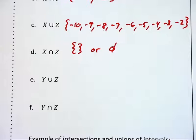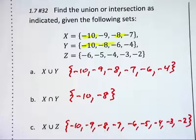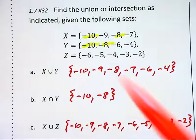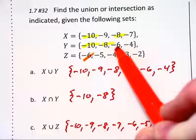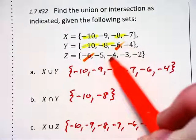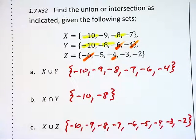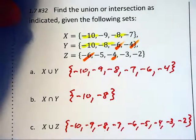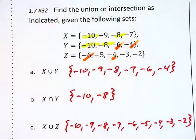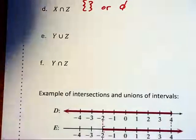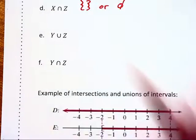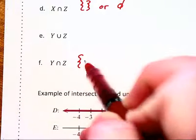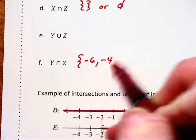Now, as far as sets Y and Z are concerned, let's go back and look at Y and Z — we have a little bit of an overlap with negative six and with negative four. So I'm going to fill in that intersection in part F first. The intersection is going to be at negative six and negative four.